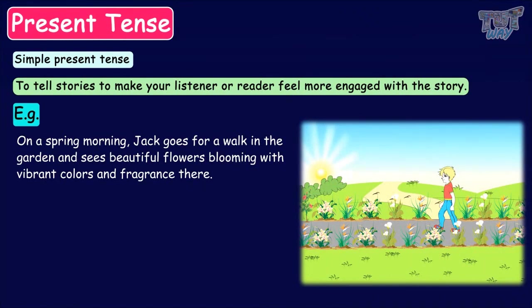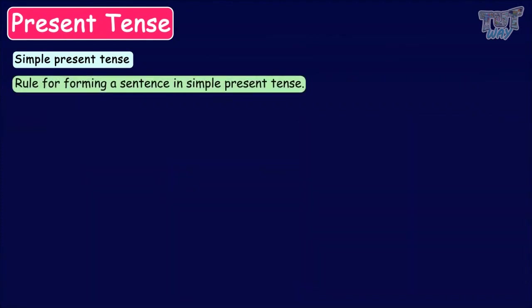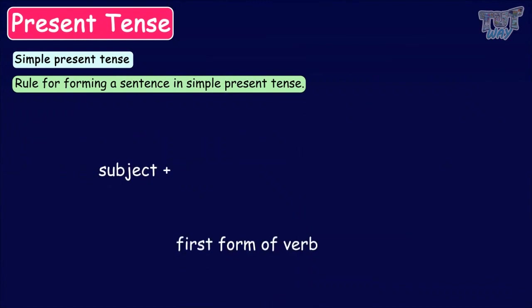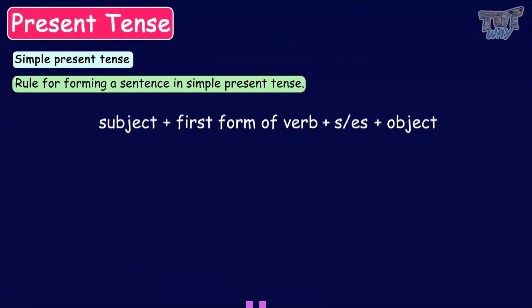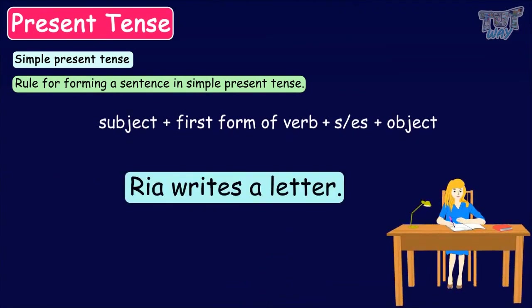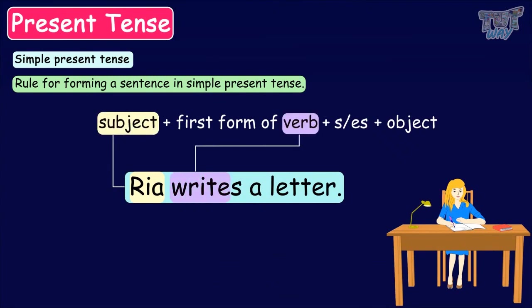This is simple present tense. Here is the rule for forming a sentence in simple present tense: subject plus first form of the verb plus s or es plus object. For example, 'Rhea writes a letter.' Here, Rhea is the subject, write is the first form of the verb and we have added s because the subject is singular, and letter is the object.